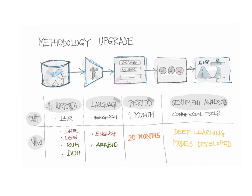The methodology has been upgraded in the following terms. Now we use four different airports versus one. Those tweets are in two different languages, English and Arabic. And data has been taken during 20 months compared to one month in previous research. Last but not least, the sentiment analysis — instead of using commercial tools as in the past — we have developed our own model using deep learning algorithms.